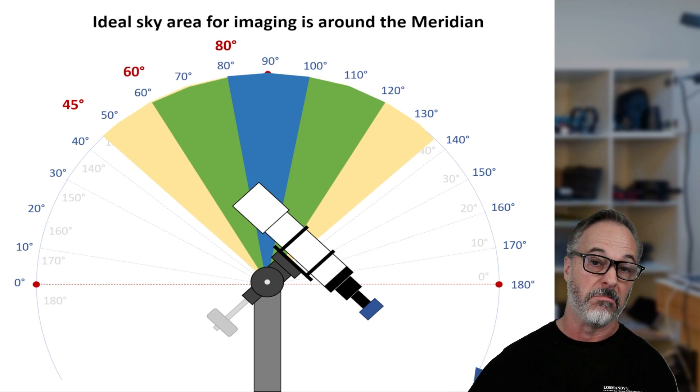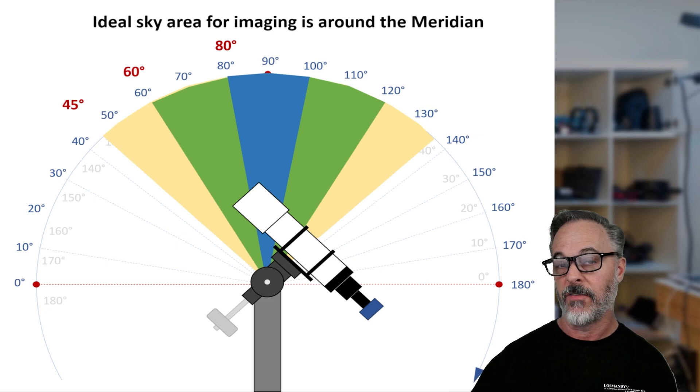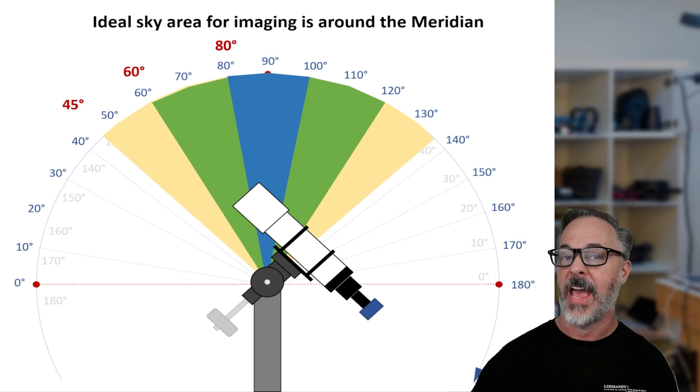So that is, you know, 45 degrees on each side. Those equate to the number of hours that you would image on each side of your meridian. So typically what I hear from more advanced imagers is they want to shoot no more than two hours on each side of the meridian to get the best possible imaging time with the least amount of atmosphere.